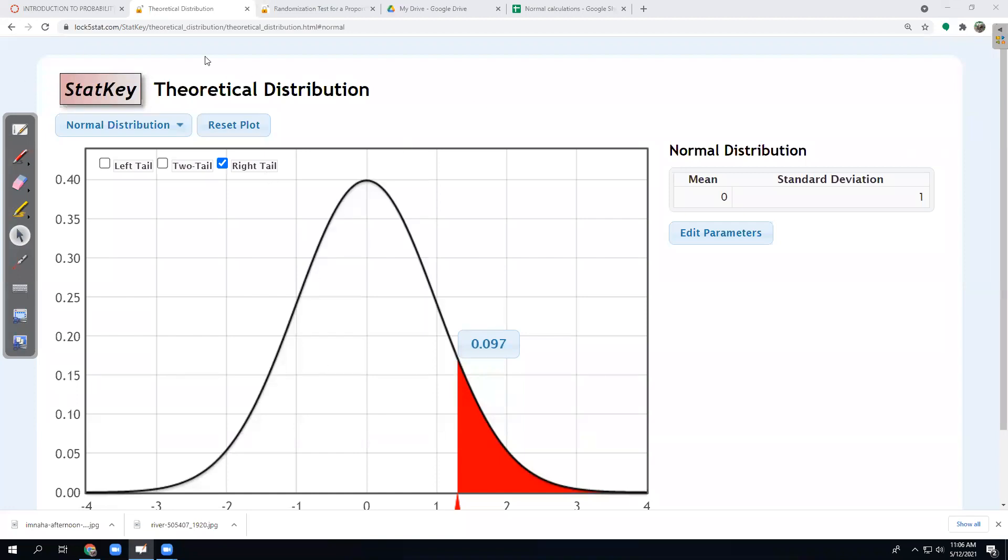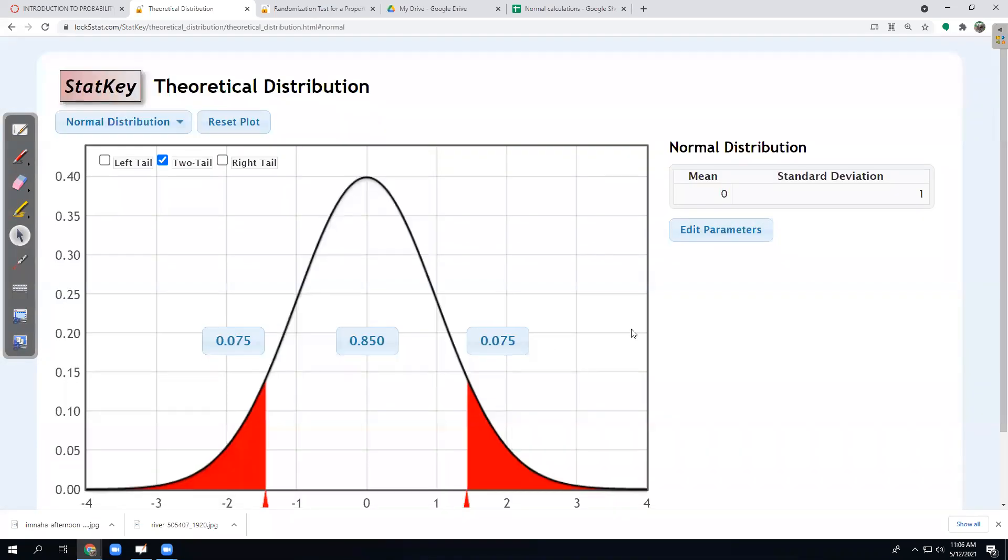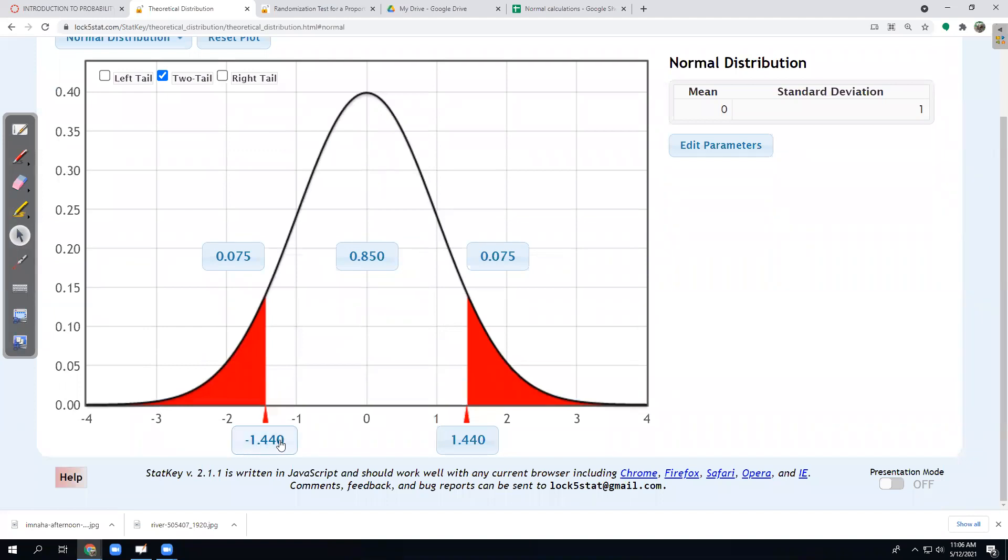And I want the theoretical normal distribution again. And so if you need that link, put it in the chat or in the YouTube video description. Here's the page I'm on. I'm going to reset it. Double check mean and standard deviation. I'm doing z-scores, so I don't have to change that. And I want to do two tail with 85 in the middle. So the nice thing about two tail is it balances the left and right tail for me. So I don't have to worry about it. Just tell it, put 85 or 85 percent in the middle.